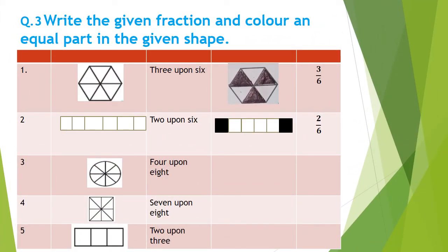Now let's do question number three: Write the given fraction and color the equal parts in the given shape. You can see various shapes are given. In the first shape, it is written as three upon six. Three is the numerator and six is the denominator, meaning out of six parts, three parts you have to color, as you can see in this picture. The second example: two upon six means out of six parts you have to color two parts, with two as the numerator and six as the denominator. Rest of the sums, do with your own.